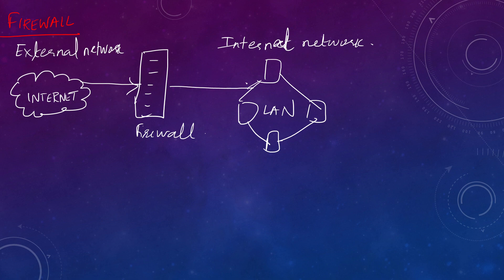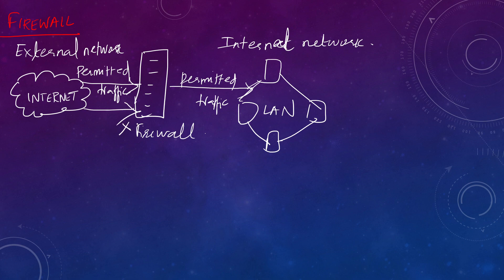What is the role of a firewall? There is permitted traffic into the organization. Permitted traffic means there is a standard set of predefined rules based on which traffic is permitted inside the internal network. Only permitted traffic is allowed in. If there is unauthorized or unwanted traffic, that is restricted by the firewall.